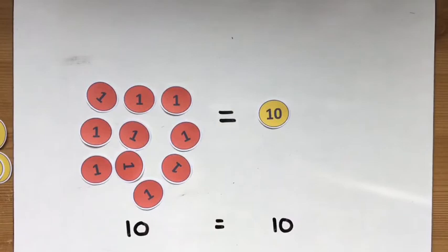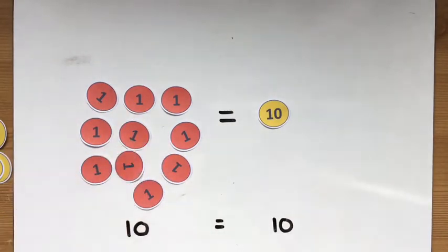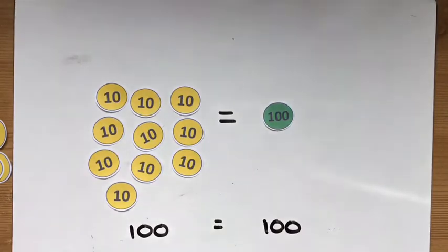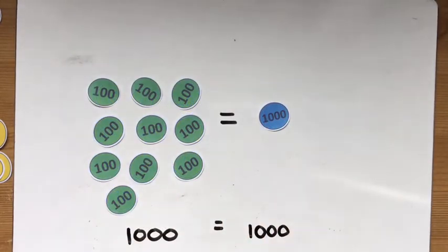The next part involves exchanging. So you need to be confident that 10 ones equal 1 ten. You need to know that 10 tens are the same as 100. And you need to know that 10 hundreds are the same as 1000.